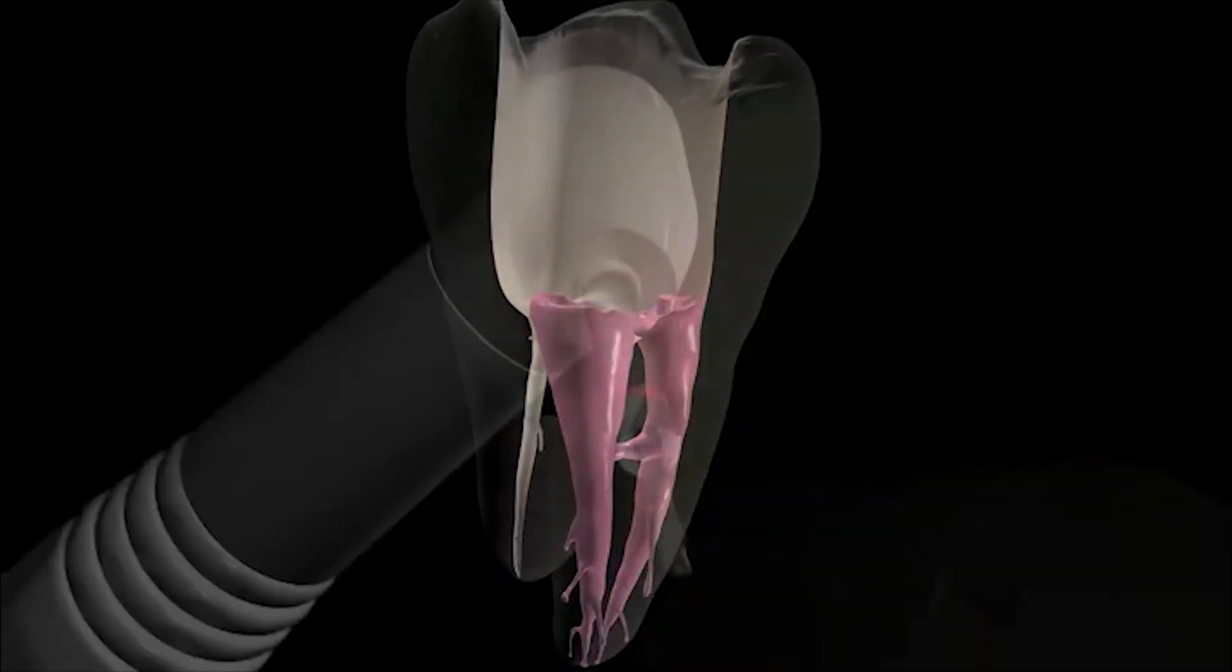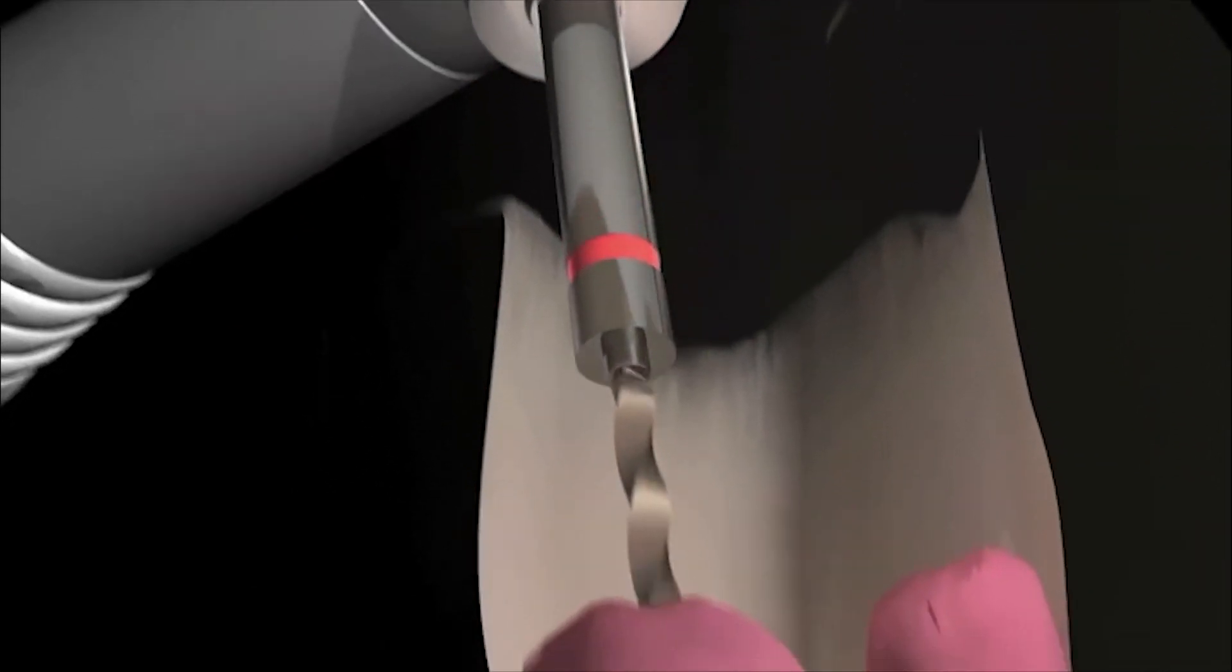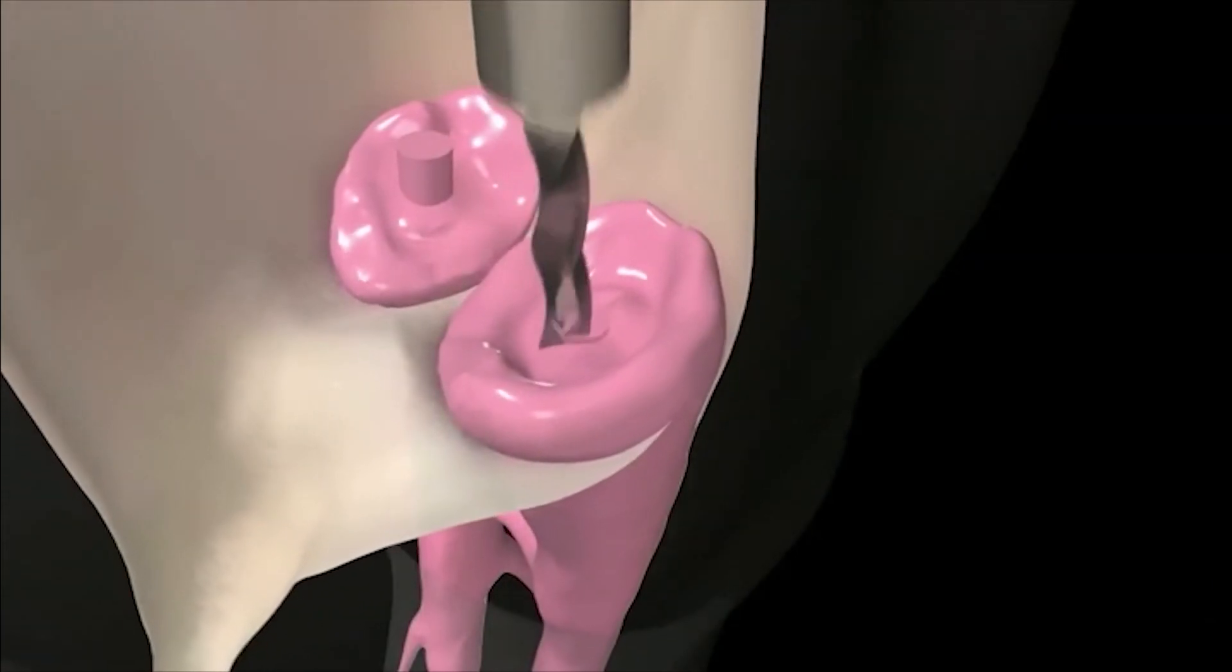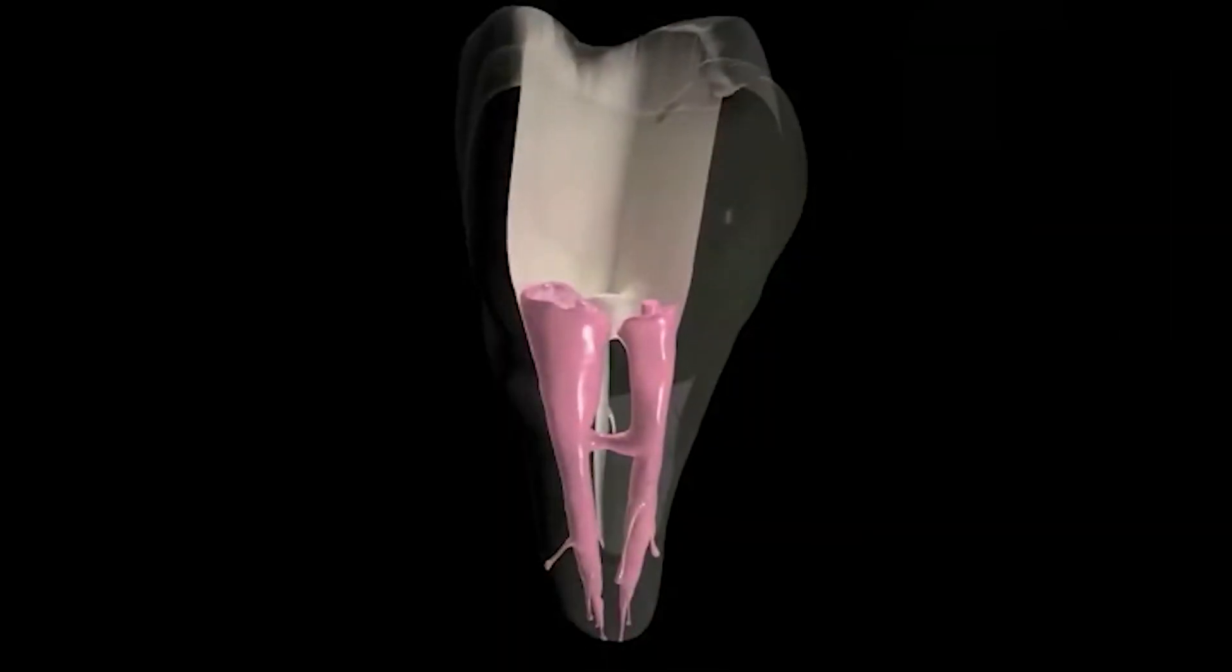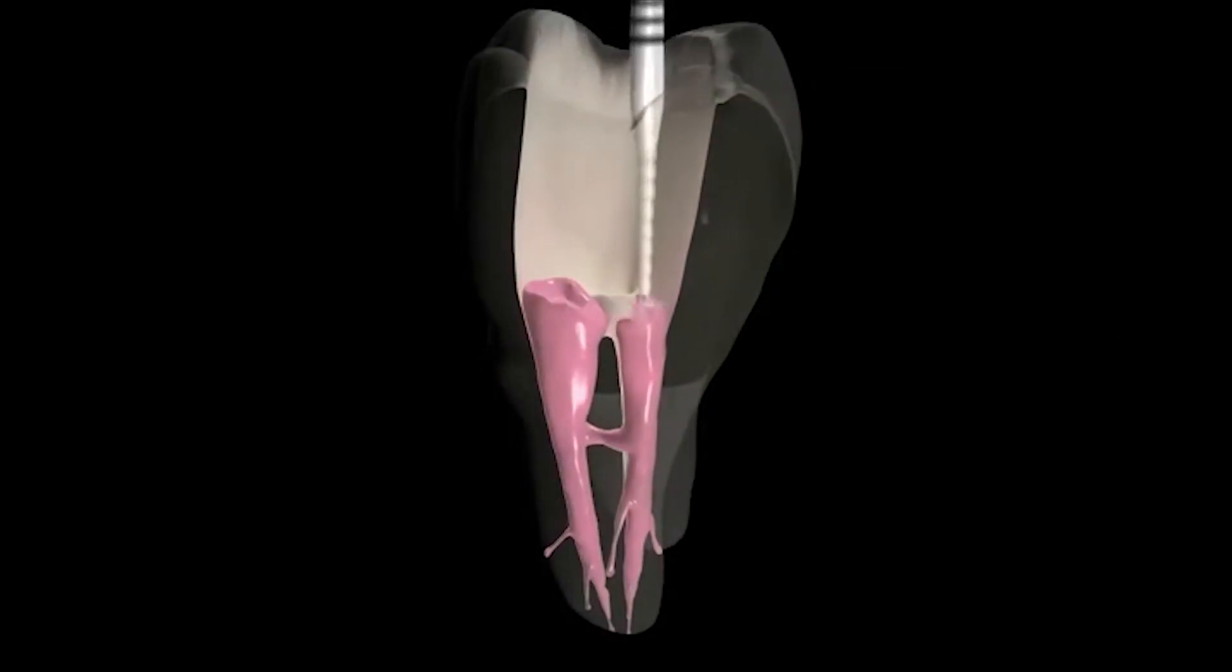Guttapercha Core obturators remove easily like Guttapercha because they are Guttapercha through and through. You'll see the familiar shredding characteristic, whether you're creating post space or retreating.